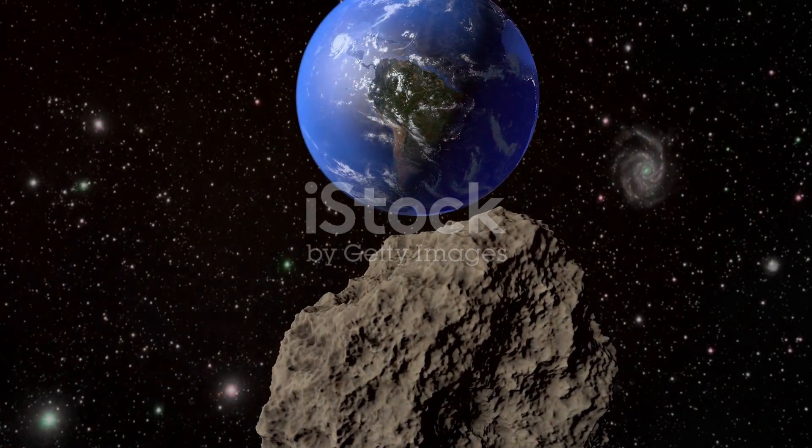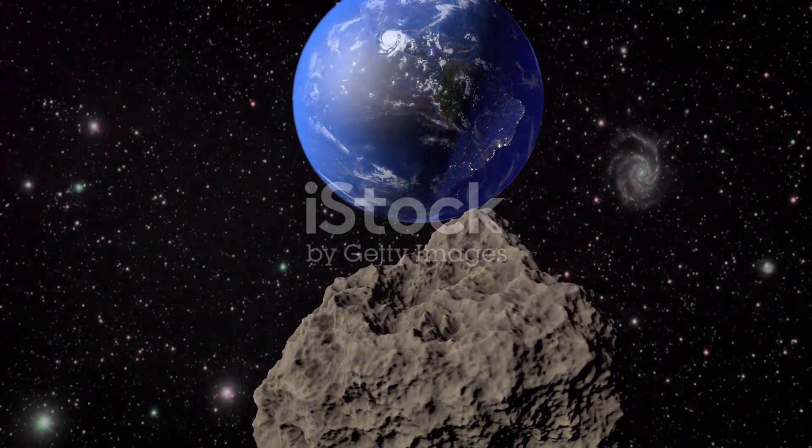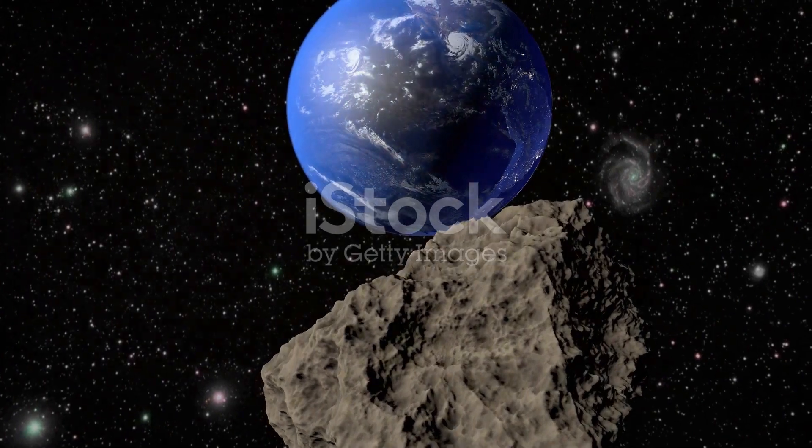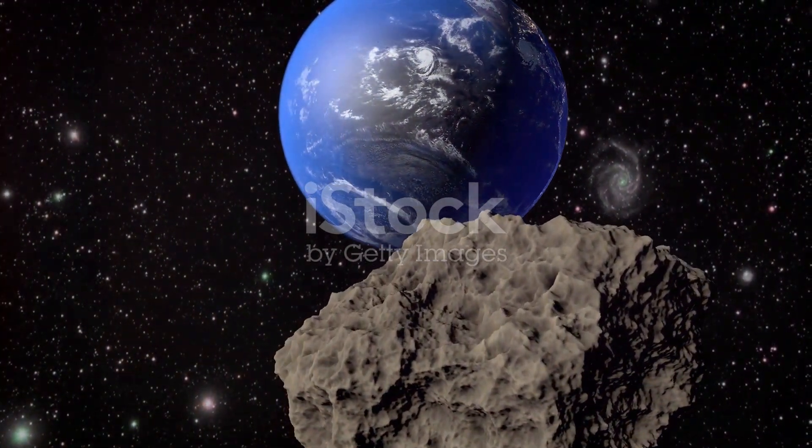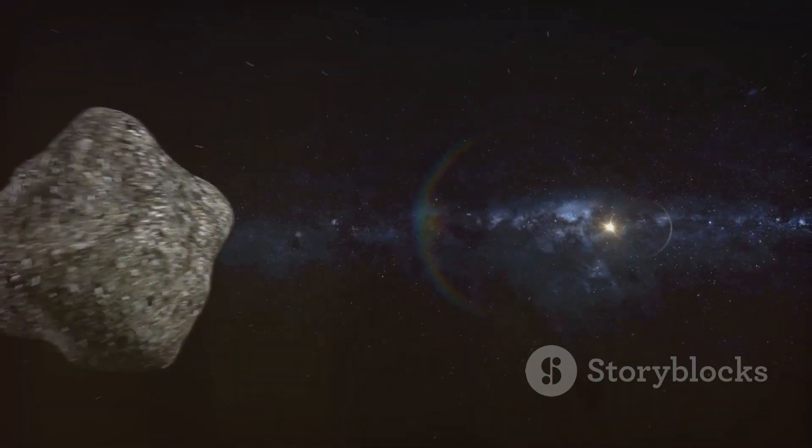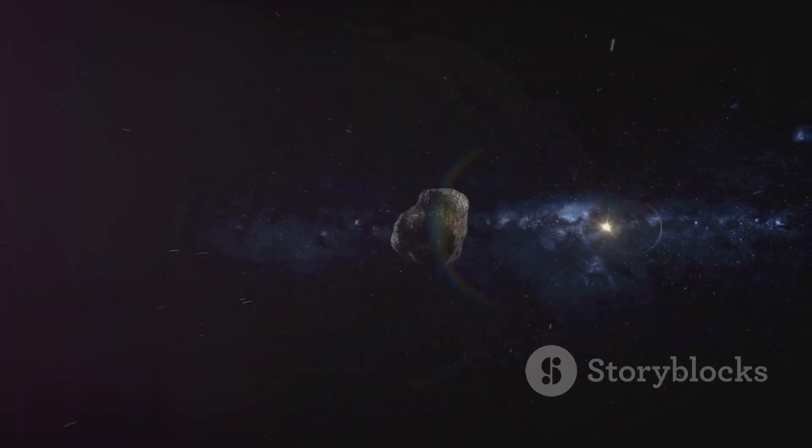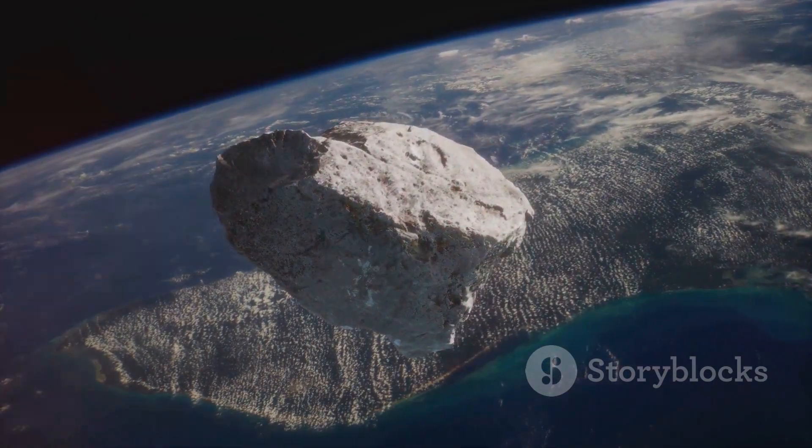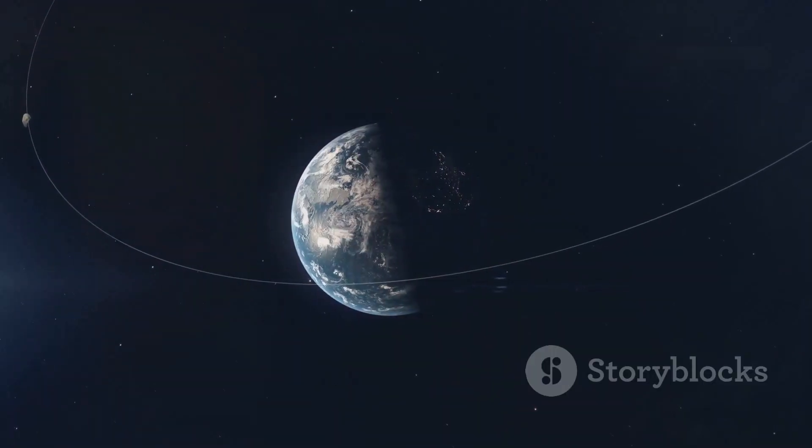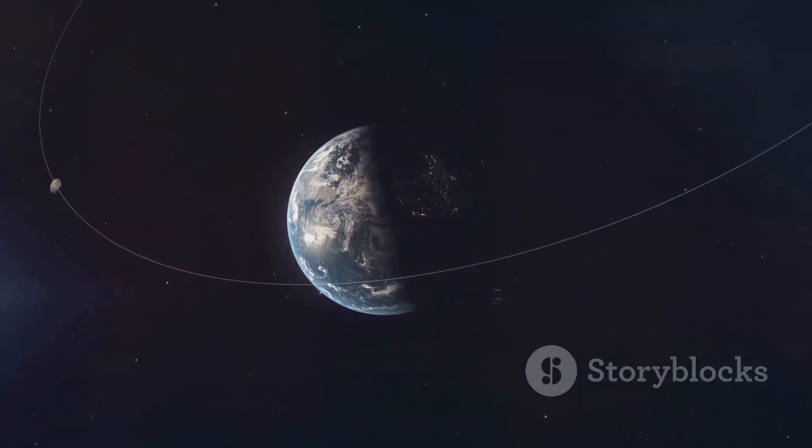For an asteroid to become a mini-moon, several factors must align. The object has to be moving at just the right speed. Too fast, and it will shoot past Earth. Too slow, and it might be pulled into a collision course. In this case, the asteroid's speed is just right for Earth's gravity to catch it.